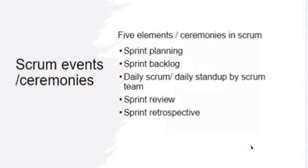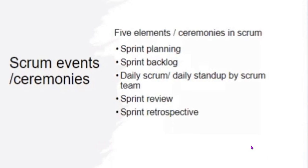Then we have Sprint Review. Sprint Review may take up to four hours. The team discusses what has been done, what is left to do, and how to progress — and it usually brings about an increment. Then we have Sprint Retrospective, which usually has a time box of three hours. We come together and discuss the Sprint we just finished: what went well, what didn't go well, and what we need to add in the next Sprint to make it better. That's basically the Scrum Ceremonies.